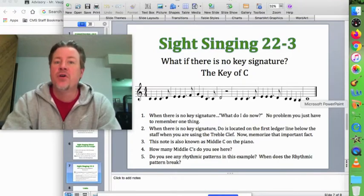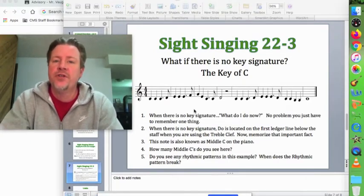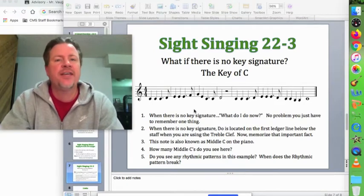Hi, this is lesson 25: no key signatures. When there's no key signature, we call that the key of C.